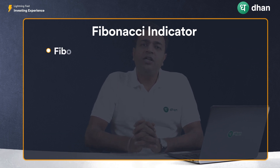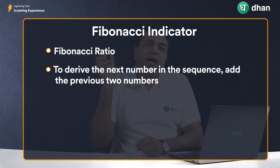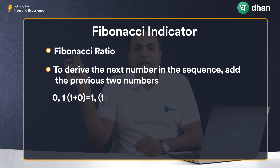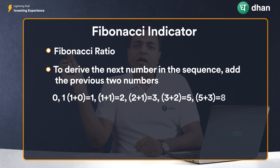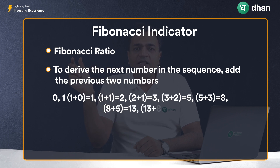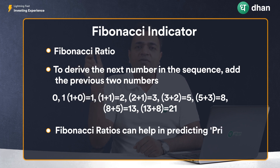To understand the Fibonacci ratios, it is very important that we understand the construct of the Fibonacci series. Let's assume a binary world where we have two numbers, 0 and 1, and then you derive the third number by adding the preceding two numbers. So 0 plus 1 equals 1, the fourth number becomes 1 plus 1 equals 2, the fifth number is 1 plus 2 equals 3, and so on. When you take two numbers to begin with and derive the third by adding the preceding two, you arrive at an infinite series. And if you take a ratio of any two numbers in the series in a predefined fashion, you will be able to identify key Fibonacci ratios.